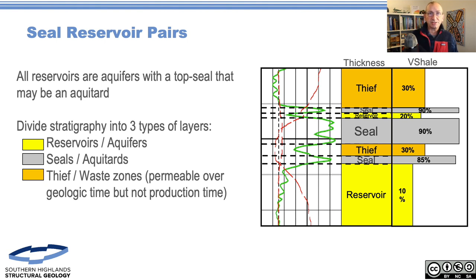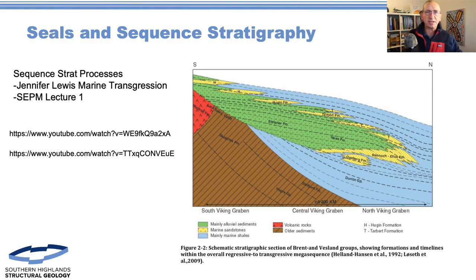It's subjective to a certain extent, but if we deal with it probabilistically we can get away with a lot of this. Where we rely strongly is sequence stratigraphy, because those seals aren't there randomly. One thing we think about a lot is where we've got transgressive systems tracts. This is a famous diagram from the Brent sequence. In particular it shows we've got a delta - the Brent sequence prograding out into the Viking Graben.